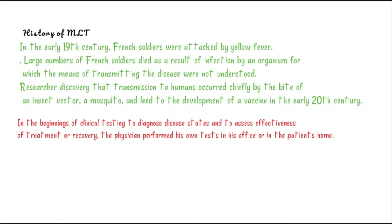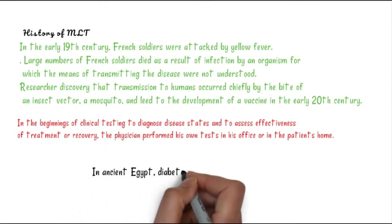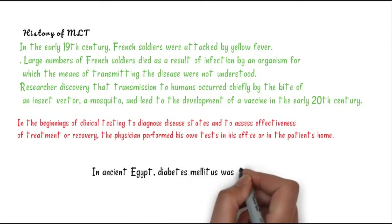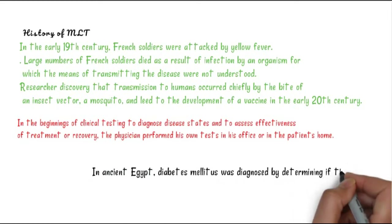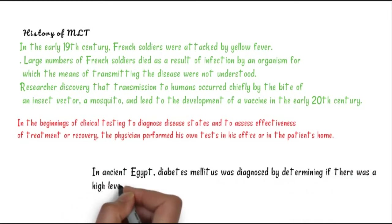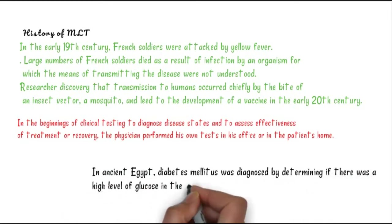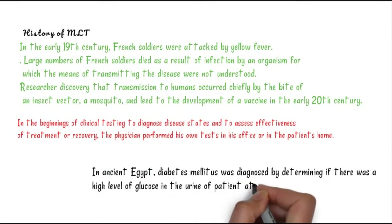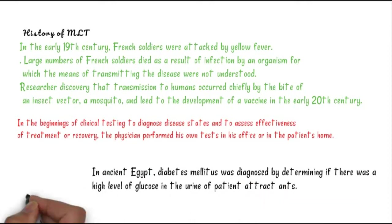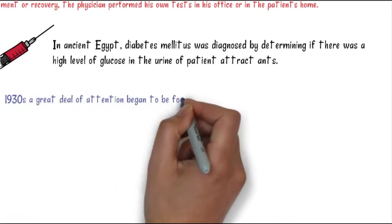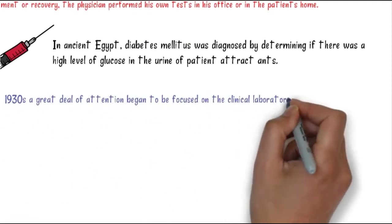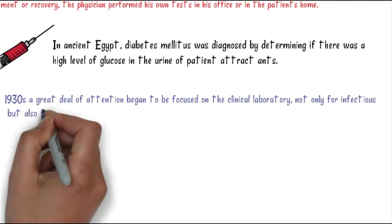There was no laboratory in hospitals. In ancient Egypt, diabetes mellitus was diagnosed by only checking if the patient had high glucose levels in urine. They would pour the urine on the ground, and if ants were attracted by the sugar, the patient had diabetes mellitus. Interesting - they were also using their knowledge effectively.